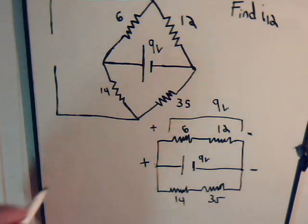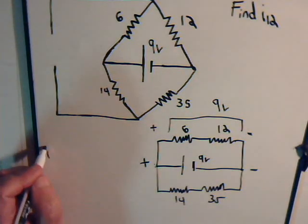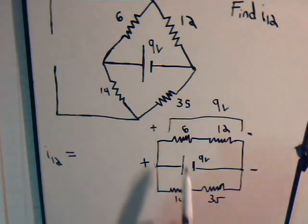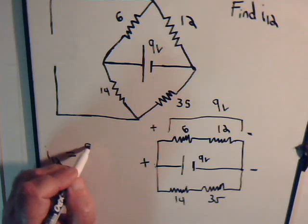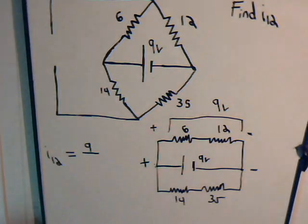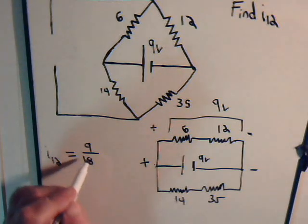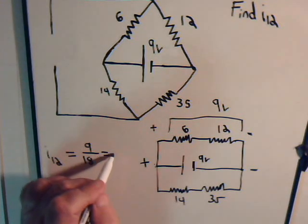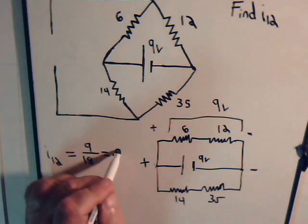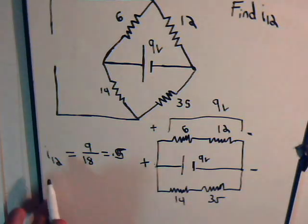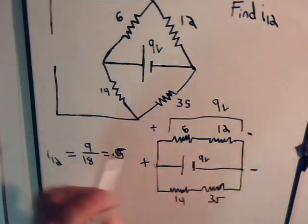So here then, due just to the voltage source, I12 will equal the voltage drop across them, 9 volts, divided by the total amount of resistance, 18. So here we have 0.5 amps going through I12, and it's going in this direction.